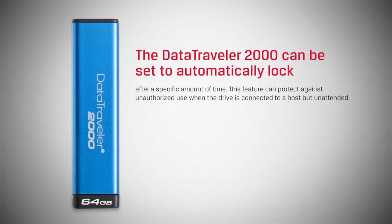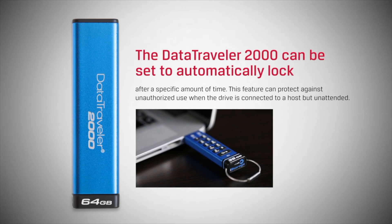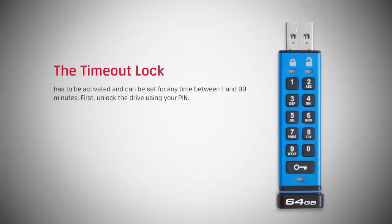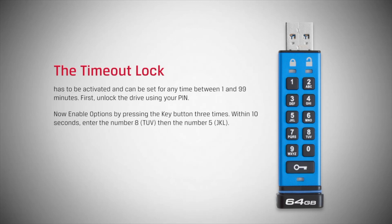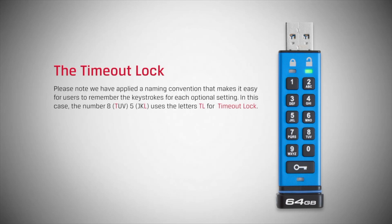The DataTraveler 2000 can be set to automatically lock after a specific amount of time. This feature can protect against unauthorized use when the drive is connected to a host but unattended. The timeout lock can be set for any time between 1 and 99 minutes. First, unlock the drive using your pin. Now enable options by pressing the key button three times. Within 10 seconds, enter the number eight and then the number five. Press the key button once. Then within 10 seconds, enter the length of user timeout in two digits. Press the key button once to enable timeout lock. The number eight and five uses the letters TL for timeout lock.